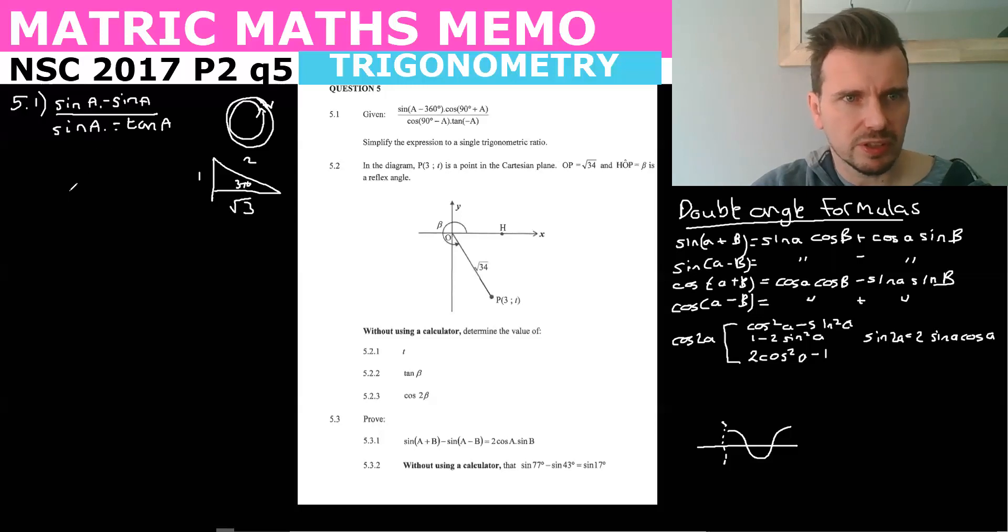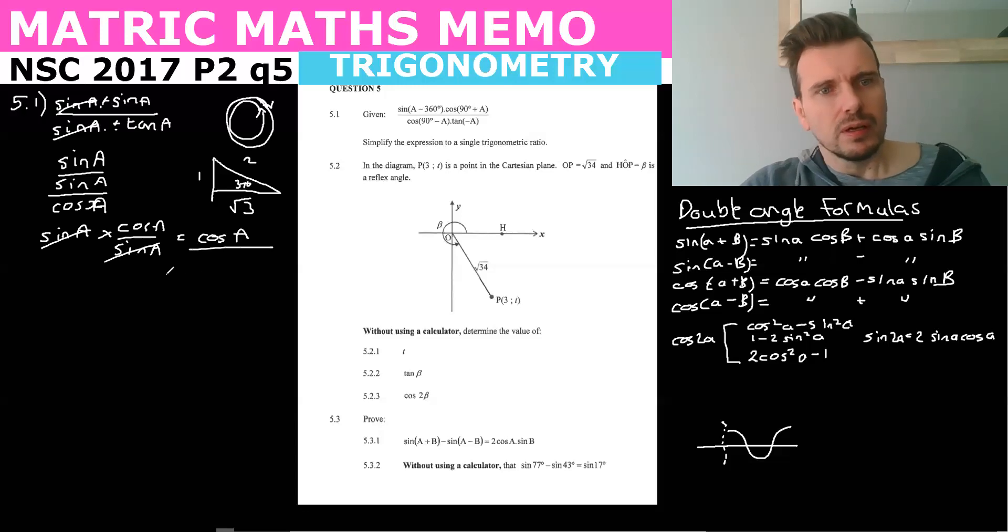Now tan is sin over cos. First, we can cancel this and this, and we can cancel the negatives, negative and negative. We can convert that tan A to sin A over cos A. So when you have sin A divided by sin over cos A, just to avoid confusion, instead of dividing by sin over cos, you times by cos over sin. This is an A, and you get cos A.